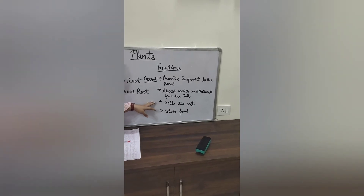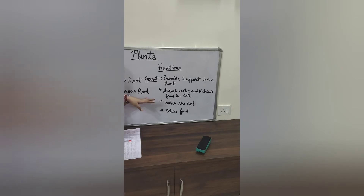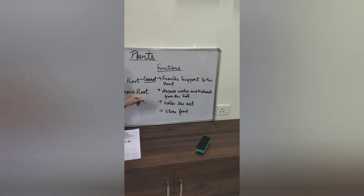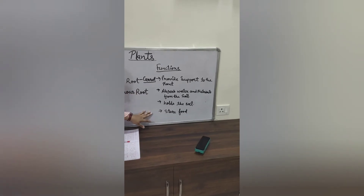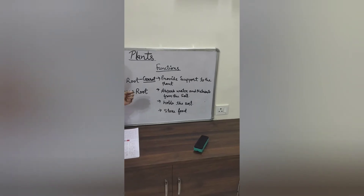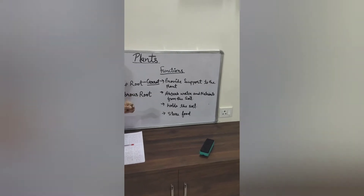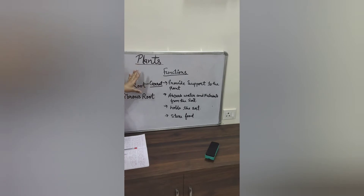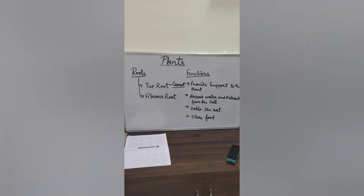Soil erosion is the washing away of soil due to heavy rains, floods, or by wind. Roots also store food in some plants like carrots and radish, which have tap roots. That is all about roots.